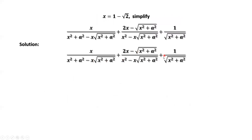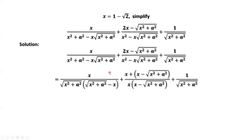This is the given expression. We want to factor this denominator. Here, we can factor square root of x squared plus a squared out. Then inside, we have square root of x squared plus a squared minus x. In the second term, we can factor x out.